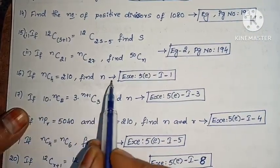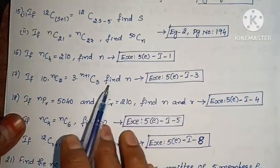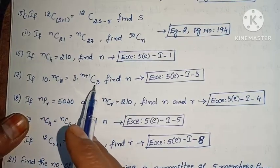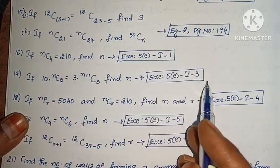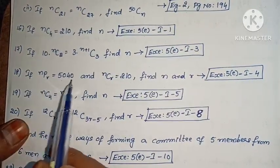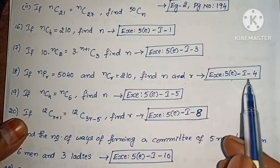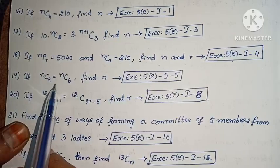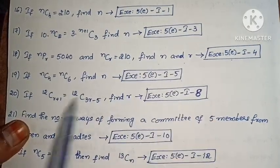Next: if nC4 equals 210, find n (Exercise 5, Roman I, first one). Next: if 10 into nC2 equals 3 into (n+1)C3, find n (Exercise 5, Roman I, third one). Next: if nPr equals 5040 and nCr equals 210, find n and r (Exercise 5, Roman I, fourth one). Next: if nC4 equals nC6, find n (Exercise 5, Roman I, fifth one).